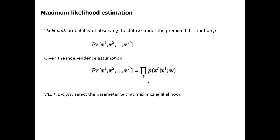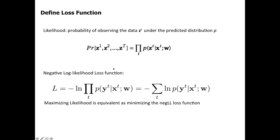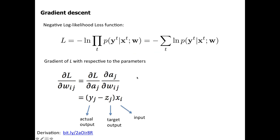The maximum likelihood estimation principle is simply to select the parameter W that maximizes the likelihood. In machine learning, typically people define a loss function that is easy to optimize. Instead of the original likelihood, people use what's known as negative log-likelihood. Because logarithm is a monotonic function, maximizing likelihood is equivalent to minimizing the negative log-likelihood. We do that by computing the gradient of the loss function with respect to all the parameters — the connection weight matrix.